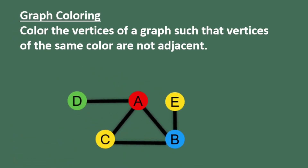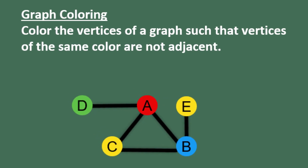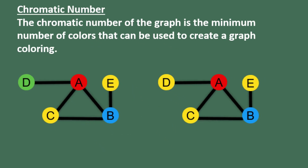There are a few facts we need to remember in order to be successful in this task. First, we need to remember what a graph coloring is. Graph coloring is just where you color the vertices of a graph so that vertices of the same color are not adjacent to each other. In other words, any edge is joining vertices of different colors. We also need to remember what a chromatic number is. A chromatic number is just the minimum number of colors that can be used to create a graph coloring on a particular graph.